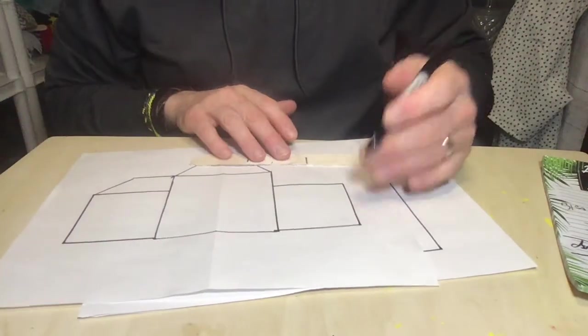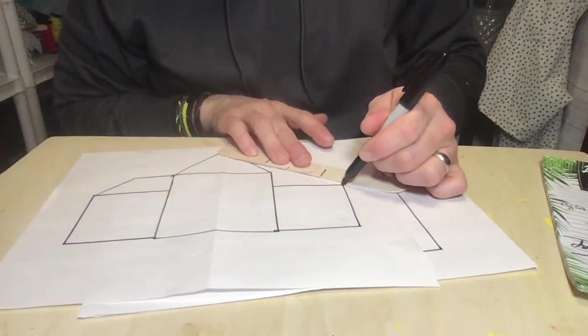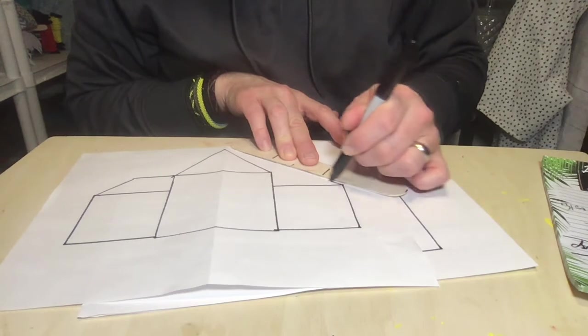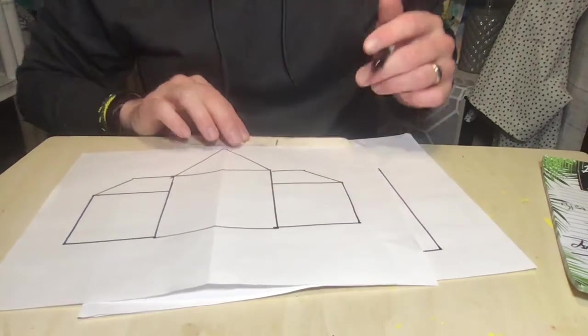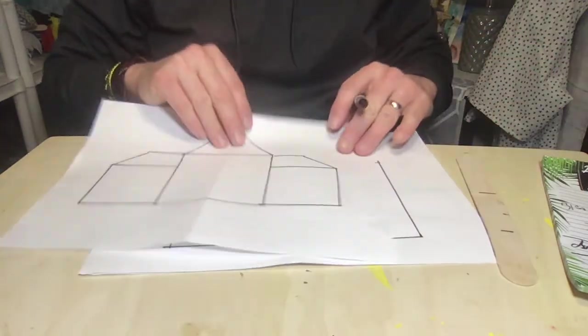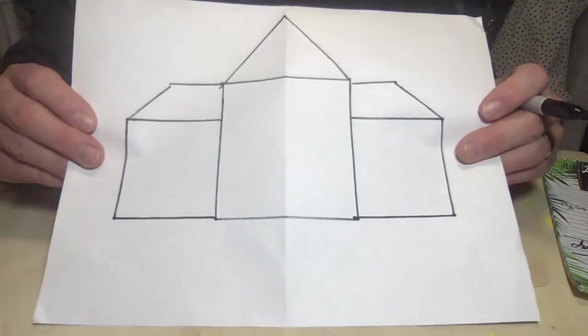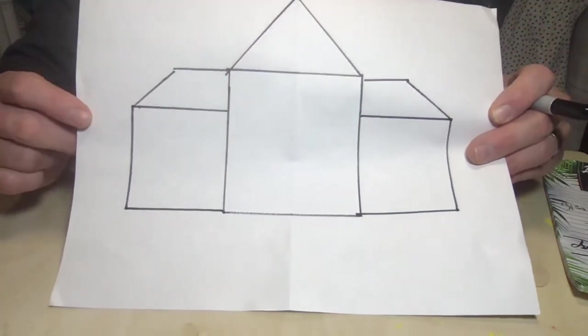And then connect it straight across. Oops, a little crooked. That's all right. So do you see how I was able to put the roof line on that house? It doesn't have to be a triangle.